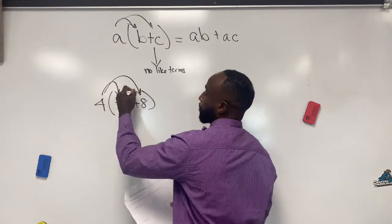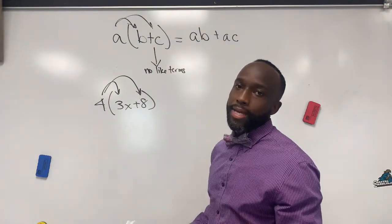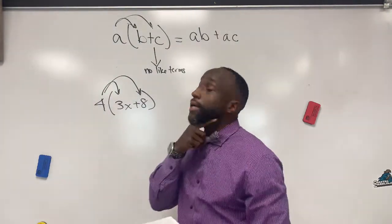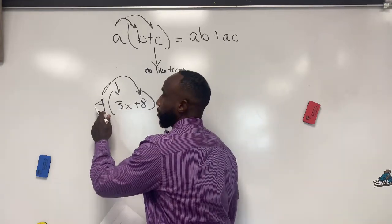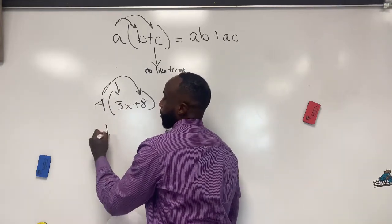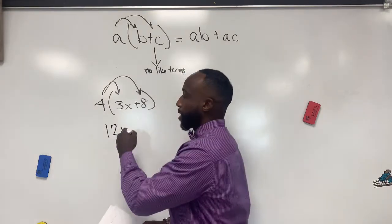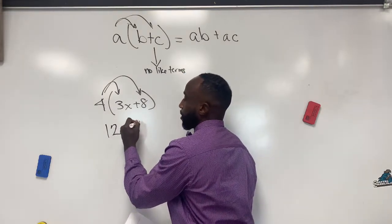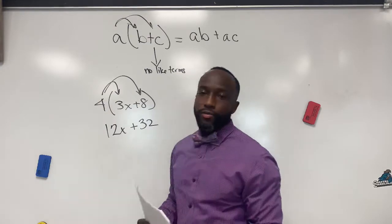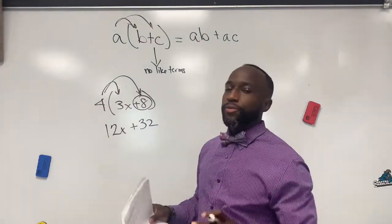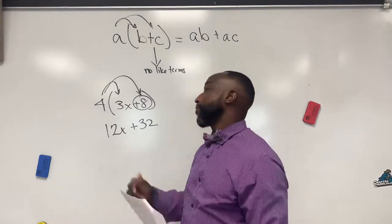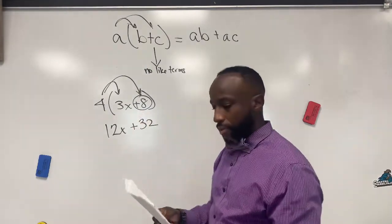The arrows will symbolize multiplication. So the first arrow is four times three, which is twelve x, and then four times eight, which is thirty-two. The reason I want you to draw your arrows is so that you don't forget about this last term. A lot of times when we do distributive property, we forget about this last term.